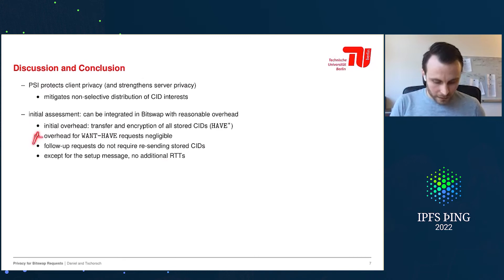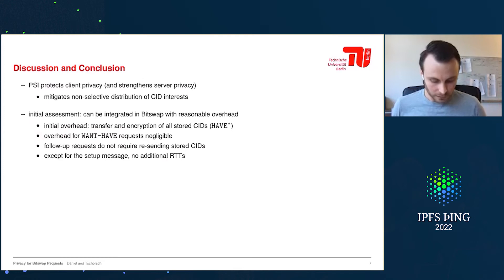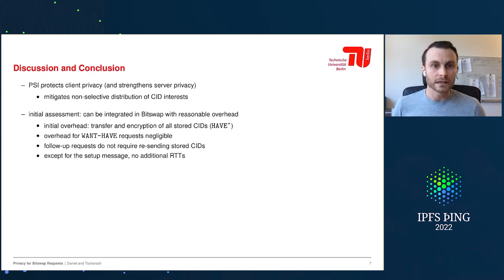The overhead for want-haves is negligible since we assume it is not as large as the have side. All follow-up requests do not require any resending of stored CIDs, so we really need to generate the half-star only once. And we have no additional RTTs because messages can be piggybacked.